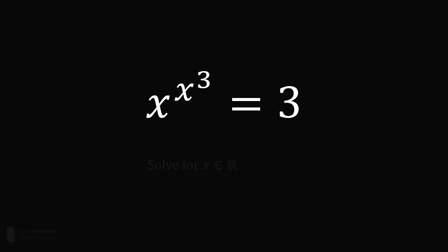In order to solve this equation, we have to understand what it means when we have nested exponents. We want to interpret them from the top down. So x to the power of x to the power of 3 should be interpreted as x to the power of x cubed, and it is not equal to the group term x to the power of x, raised to the power of 3.